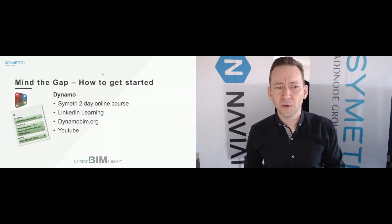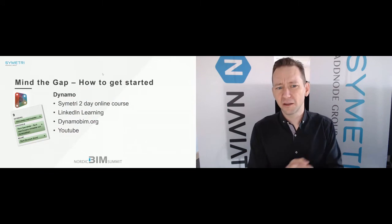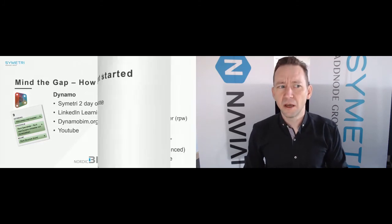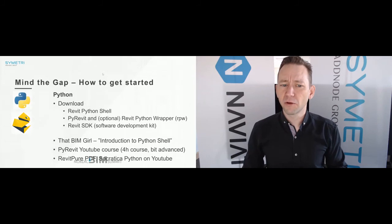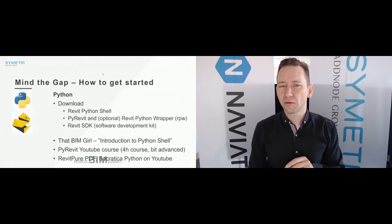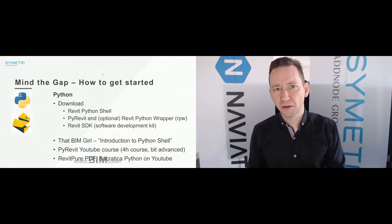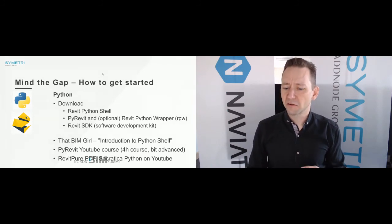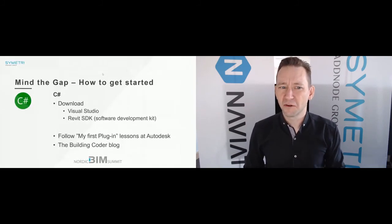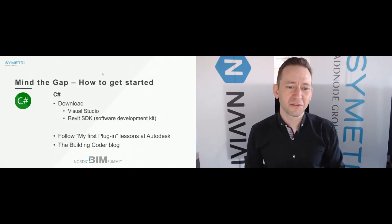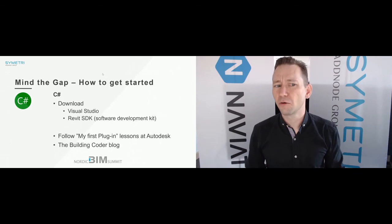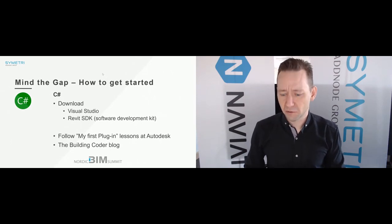So how do you get started? For Dynamo, we have a two-day course on AdSymmetry, and LinkedIn Learning and DynamoBIM.com have a lot of material. If you want to try Python, download the Python Shell, download PyRevit, and the development kit. Look at BIM Girl — she has a great introduction to Python and the Python Shell. PyRevit also has a four-hour online course that's really decent. And if you want to get started in C# — well, good luck — but Autodesk has packages and scripts and a really nice blog with how-to guides for coding in C#. It's a step to reach level four and it will take a while.